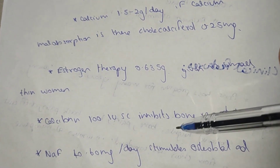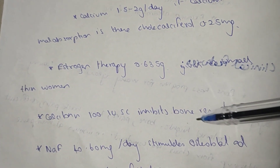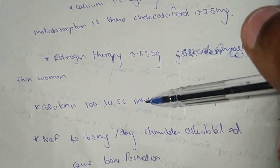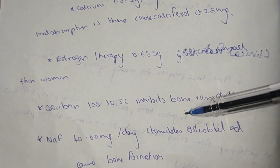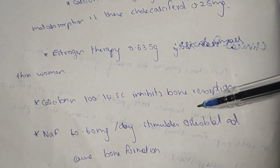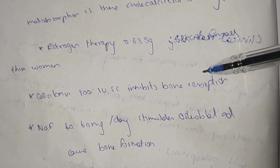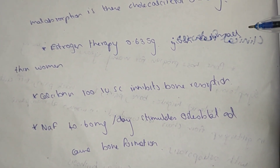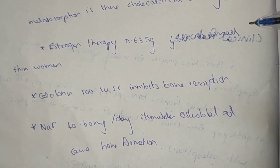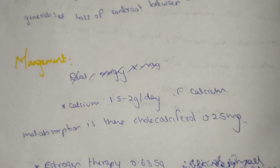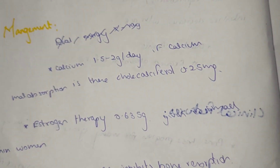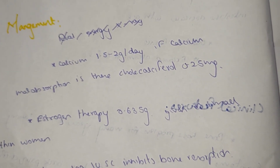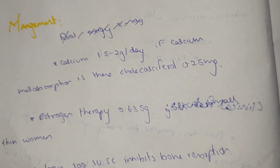Calcitonin 100 IU is given to inhibit bone resorption. Sodium fluoride (NaF) 40 to 60 milligrams daily is given for increasing the synthesis of osteoblasts, as osteoblasts help in bone formation. These are the management options for osteoporosis.